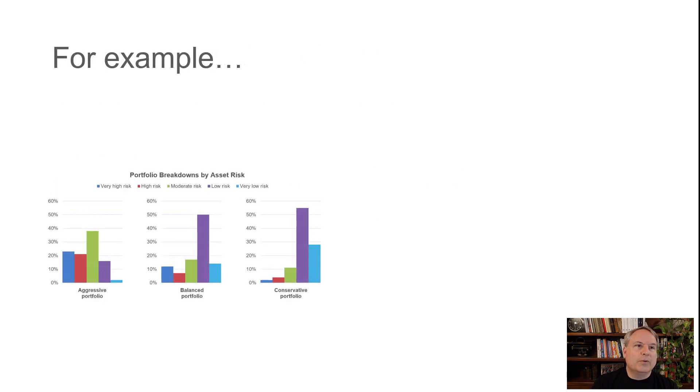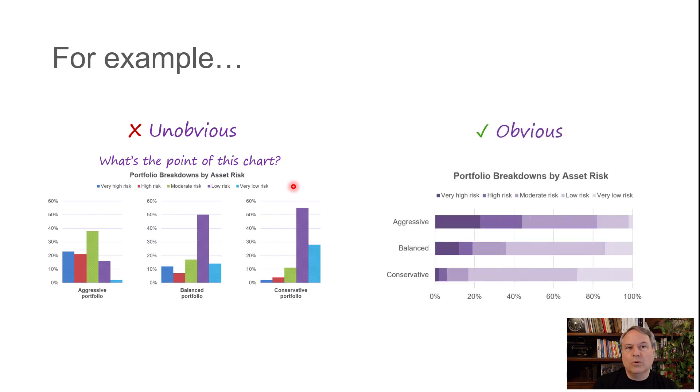For example, we have a chart here showing the breakdown of three portfolios for a money management company: aggressive, balanced, and conservative portfolios with different breakdowns of asset types by risk. Technically this is a perfectly fine chart, but what's the point? It's not particularly obvious. Something like this is much more obvious—it's the same data, but now it's clear that the aggressive portfolio has a lot more high-risk assets. I could even make it more explicit: the aggressive portfolio contains more high-risk assets. That was absolutely not obvious from the other chart.